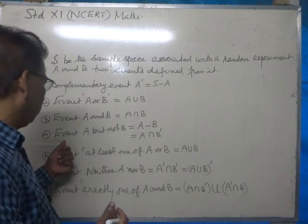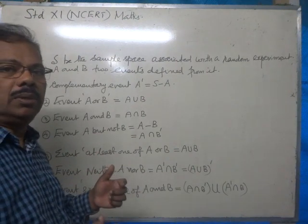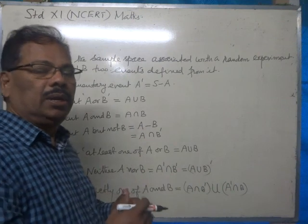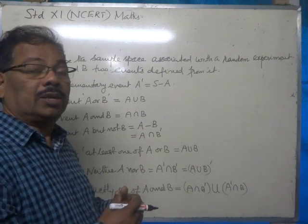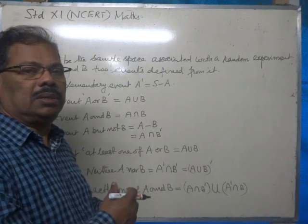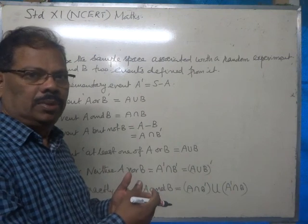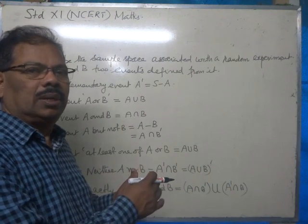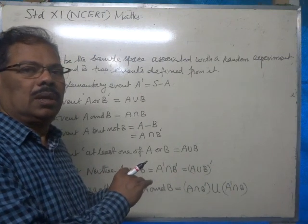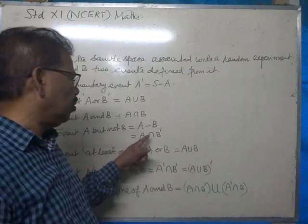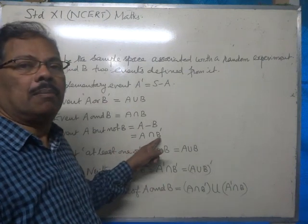Now, event A but not B. We can account elements of A excluding the elements of B. That means if there is some intersection elements, then they must be excluded. A minus B or A intersection B dash.